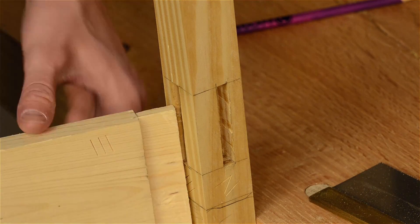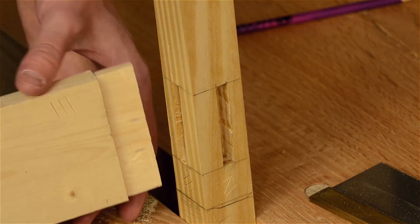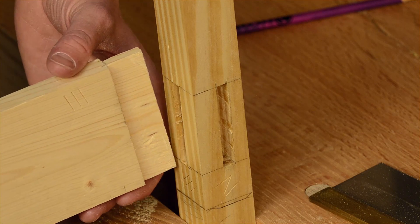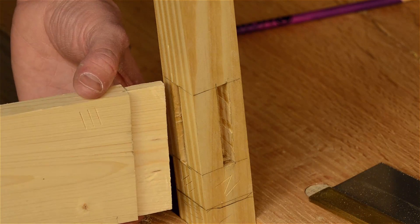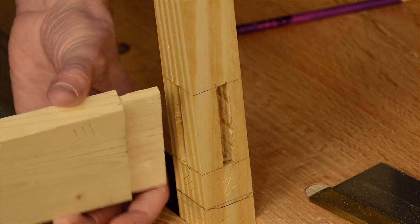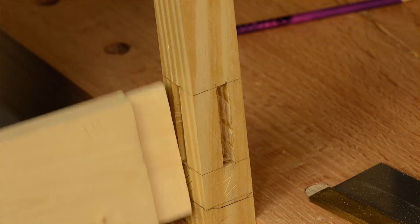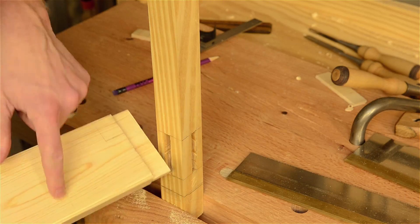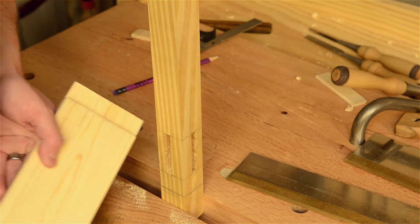You can see we have our Roman numerals matching there and there. Always check that to make sure you are putting them in the right one. So you can see here on the other side that is going to be facing downward. I have got a decorative bead cut on it.